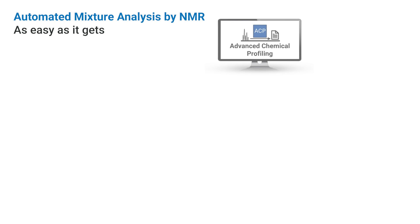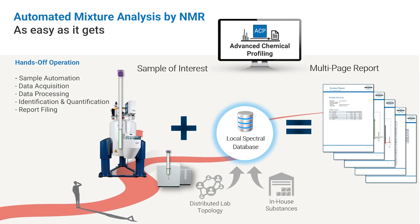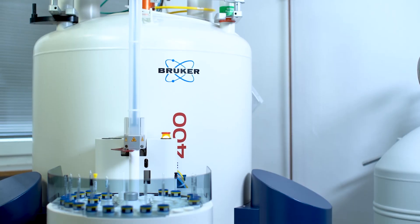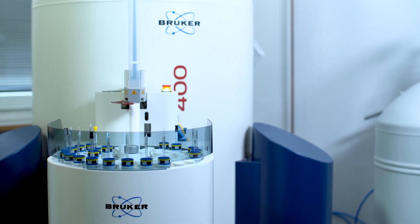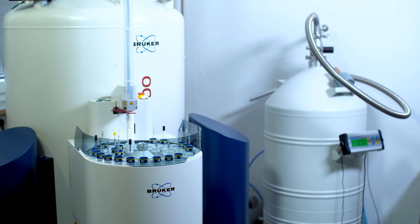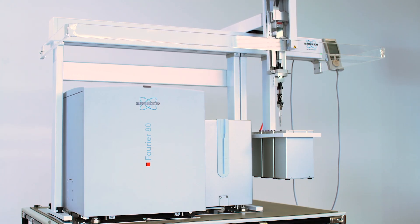Bruker's Advanced Chemical Profiling Solution offers an automated end-to-end workflow for identification and quantification of substances, either in pure form or in mixtures, from samples to report. The solution can be used with floor-standing high-field NMR spectrometers up to 800 MHz, as well as Bruker's Fourier80 Benchtop NMR spectrometer.